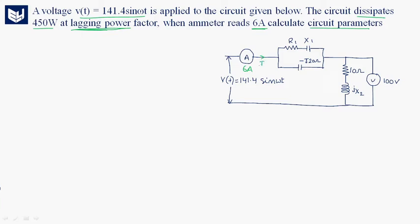Let us consider the total current I, which divides into two parts: I1 and I2. The current I = I1 + I2 flows through the circuit. This parallel combination is connected in series with another element. The series combination R1 + X1 will be Z1, and the parallel combination will be Z2.